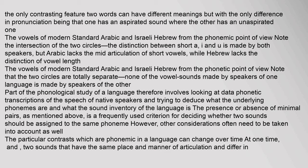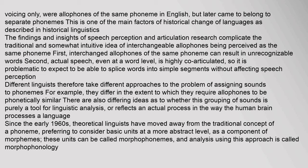Other considerations often need to be taken into account as well. The particular contrasts which are phonemic in a language can change over time — at one time, two sounds that shared place and manner of articulation but differed only in voicing were allophones of the same phoneme in English, but later came to belong to separate phonemes. This is one of the main factors of historical change in languages. Research in speech perception and articulation complicates the traditional idea of interchangeable allophones: interchanged allophones can result in unrecognizable words, and actual speech is highly co-articulated.